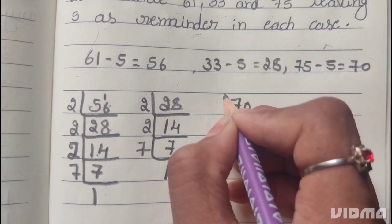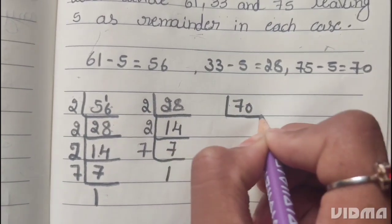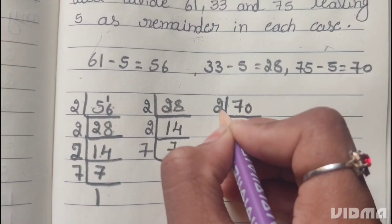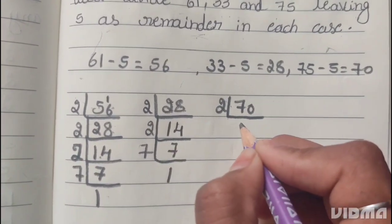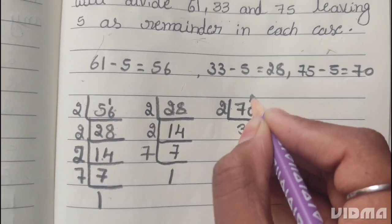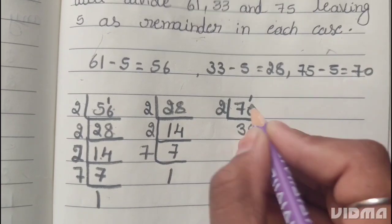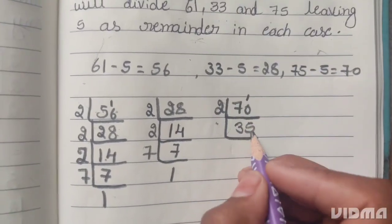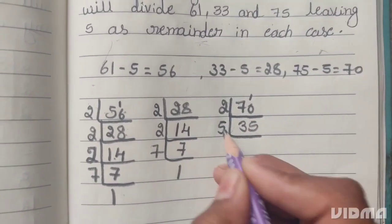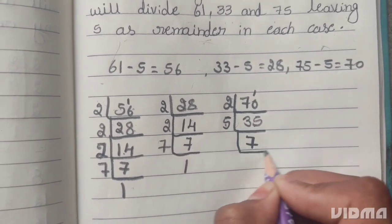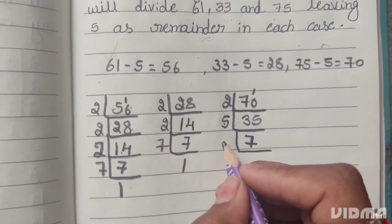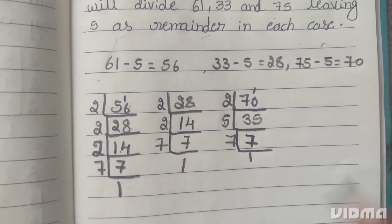Next, 70. 70 is divisible by 2, giving 35. 35 is divisible by 5, giving 7. 7 is prime number, it divides itself. So 70 = 2 × 5 × 7.